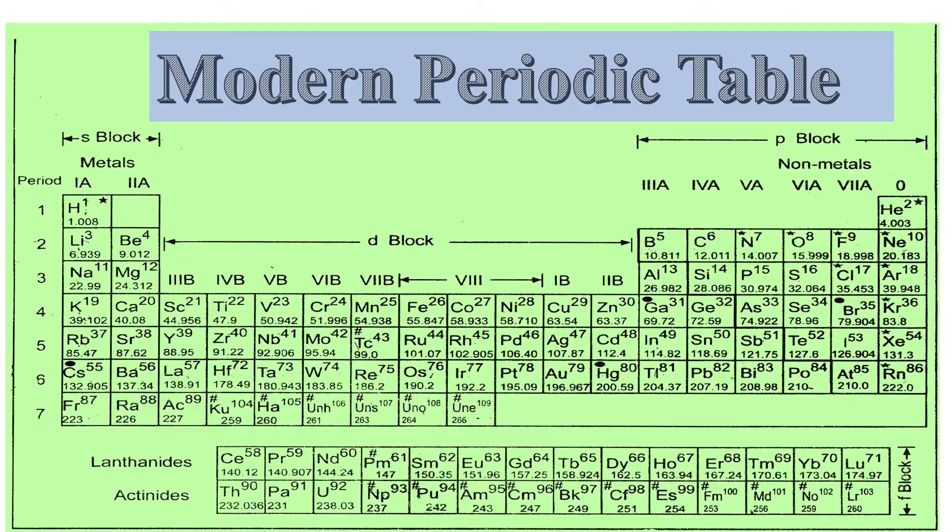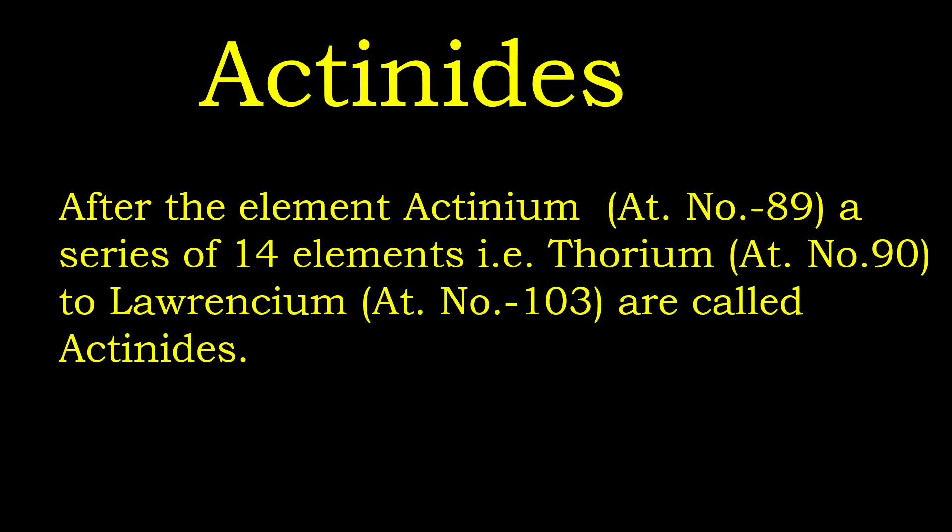But in case of this actinides, actinides also have totally different property than other elements of the periodic table. They are characterized by the electrons being filled up in F sub-shell of fifth orbit.